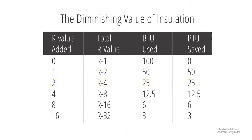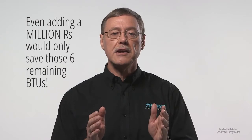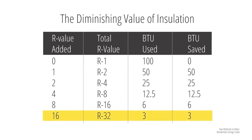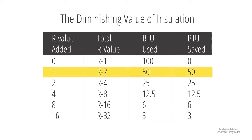Moving down to the next-to-last row of the table, where our system R is R16, we're only using six BTUs. Oddly enough, even if we had room to add a million R's in the attic, the only energy we could save would be those six BTUs — because you cannot save more than you're losing. Finally, if we double R16 to R32, we cut the six BTUs to three. So the first R we added saved 50, while the last 16 R's only saved three.